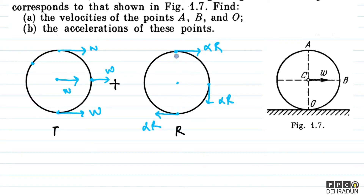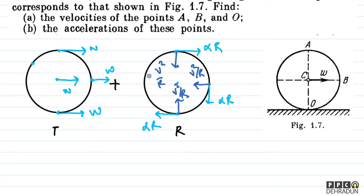When the body is in motion, points have centripetal acceleration v square upon R. The body undergoes translation plus rotation, so we can see the body is in pure rolling.